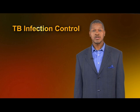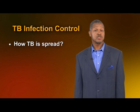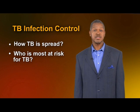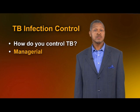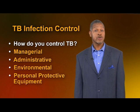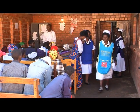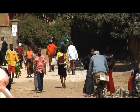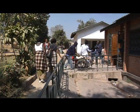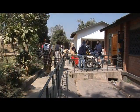In summary, we've covered the basics of TB infection control, including how TB is spread, who is at most risk for TB, and the managerial, administrative, environmental, and personal protective equipment measures that can be used to control TB. You personally are very important in preventing TB transmission from one patient to another, from a patient to a visitor in your clinic, and to yourself and your family. If you think you may be infected, it's important to get screened and seek care immediately.